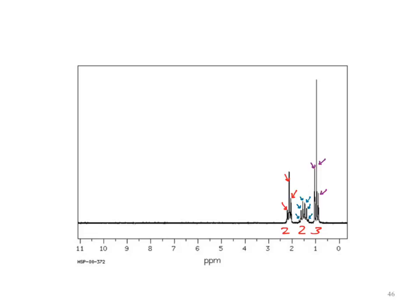The next analysis would be chemical shift. In our chemical shift, less than two we said was alkanes. That last signal is a little bit above two — we can call it anything.